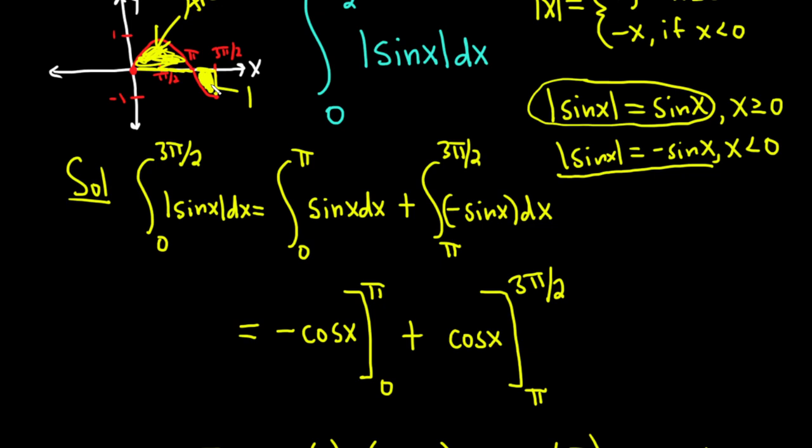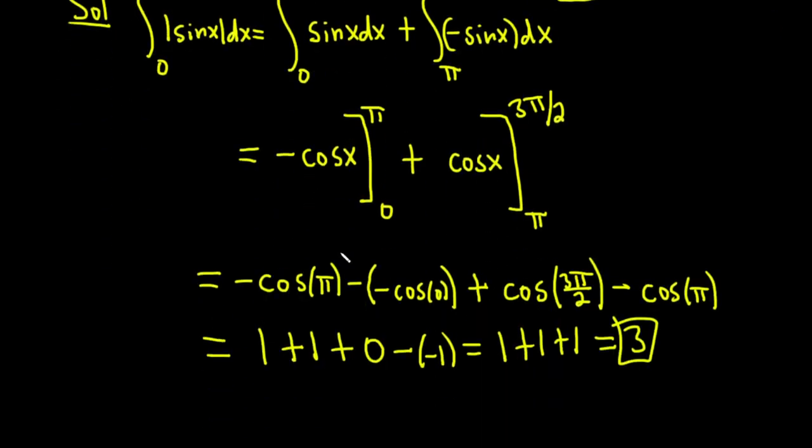So this region here, the area of this region is 1. So you have 2 plus 1 which gives you 3. Kind of cool.